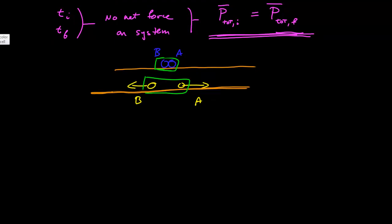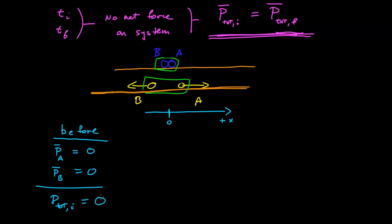First, though, we need to give ourselves a coordinate system. Always, always coordinate system. And so I'm going to say this positive x direction is off to the right. I can set zero here to be the point where the two particles are at rest, initially sitting together. Okay. So before, what are the momentum of my particles? The momentum of A is zero because it's at rest. The momentum of B is zero, so the total initial momentum is zero. Okay. Well, that was straightforward.